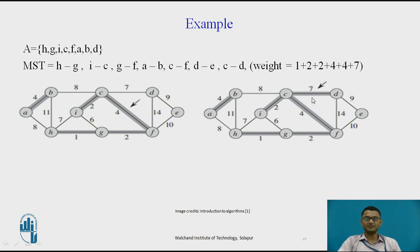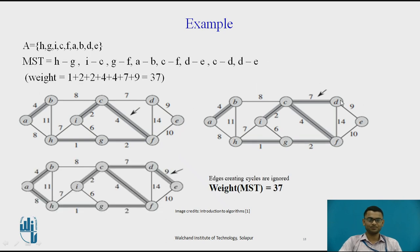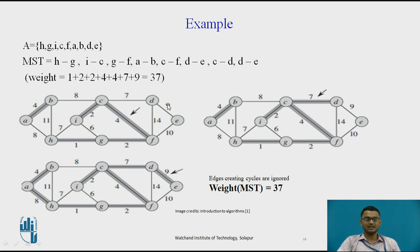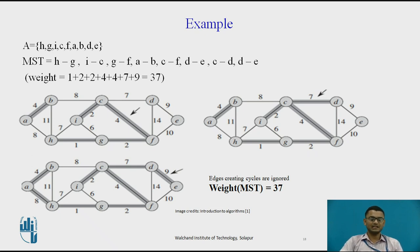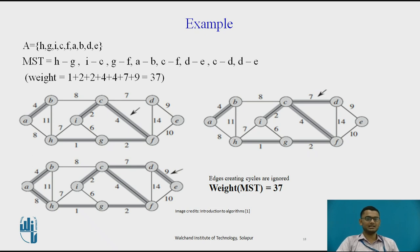Next we add the edge C to D of weight 7 to the MST. Then we add edge D to E of weight 9 to the MST. As we add one edge after the other, we must take care that if the inclusion of a particular edge creates a cycle, we drop that edge and consider the next edge available in the increasing order list.